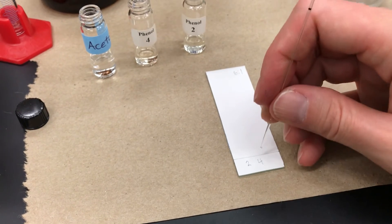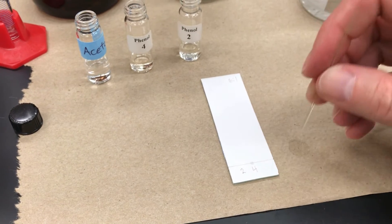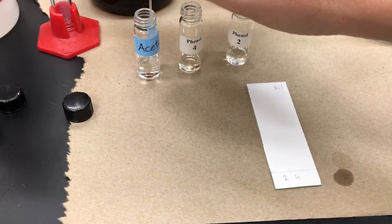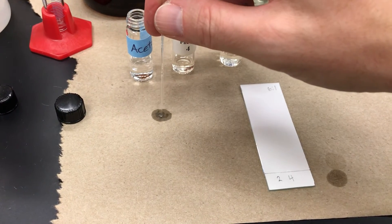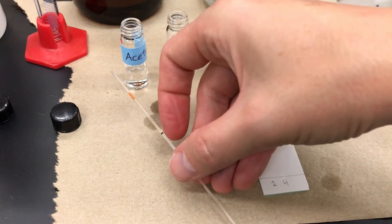I'm now going to also put the same thing in spot four. Depending on the concentration of what you have, sometimes you want to spot it more than once. You wait for it to evaporate on the line. But in this case my concentrations are correct. I just needed one spot.